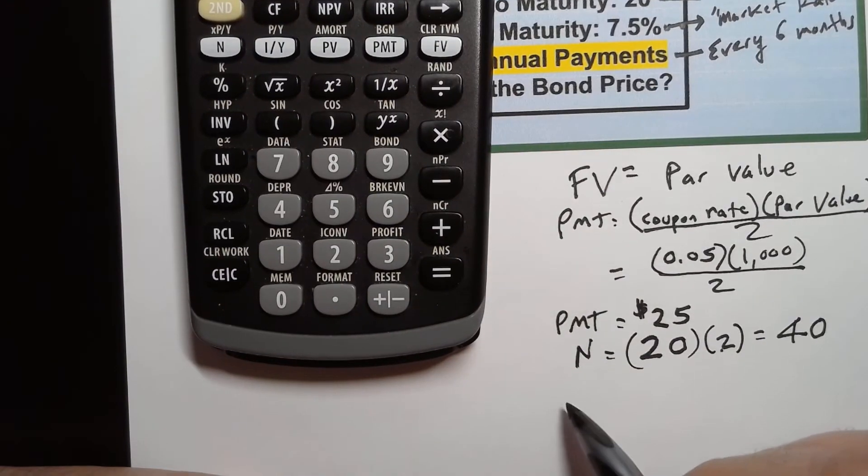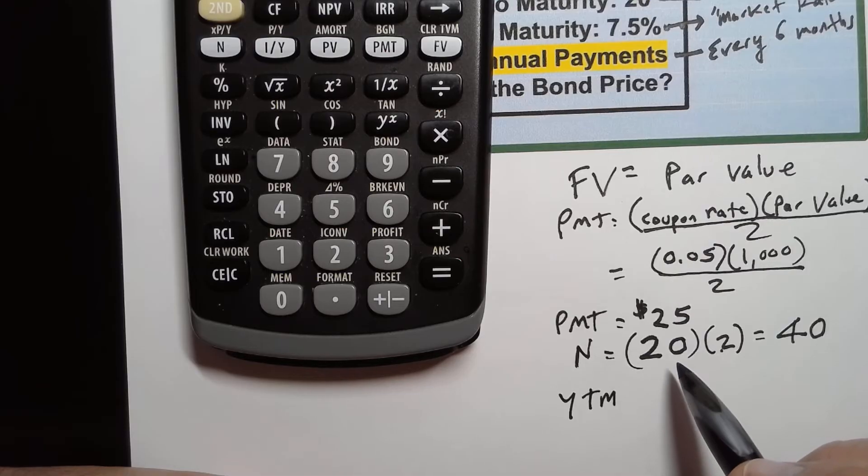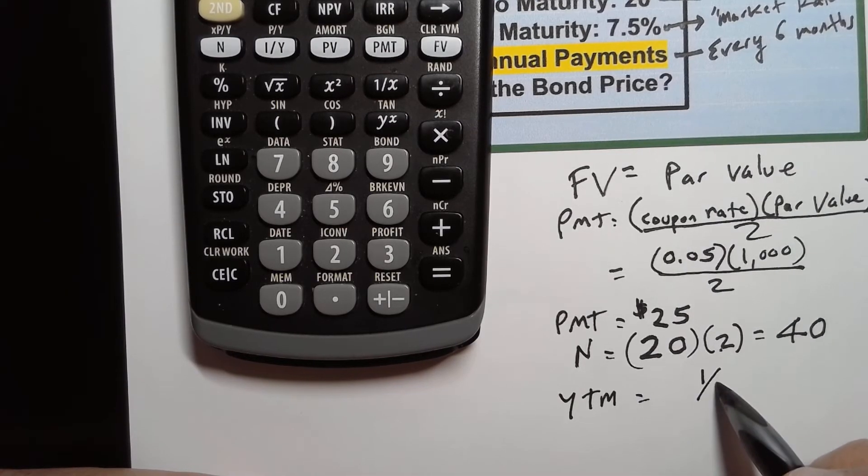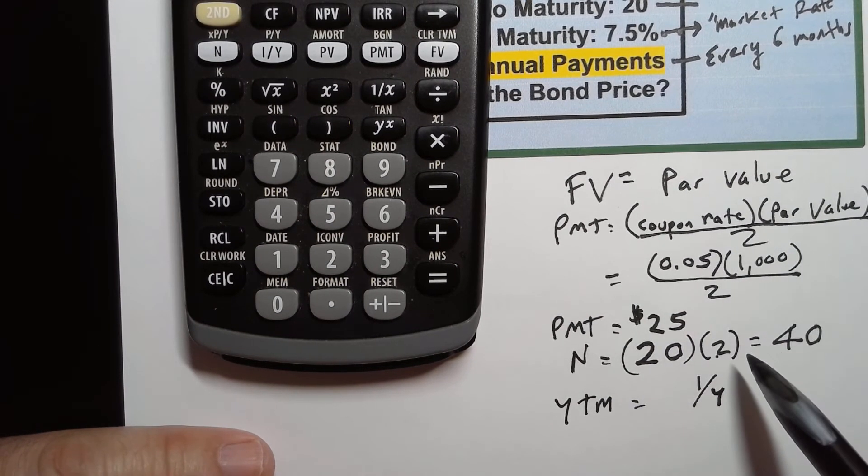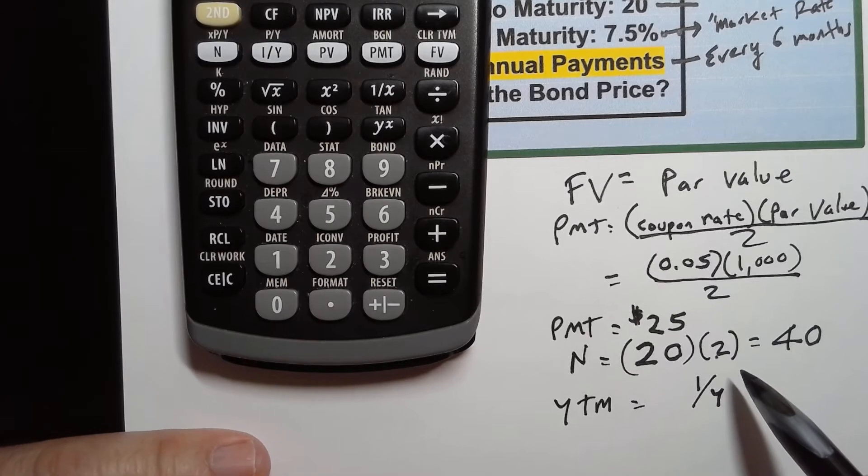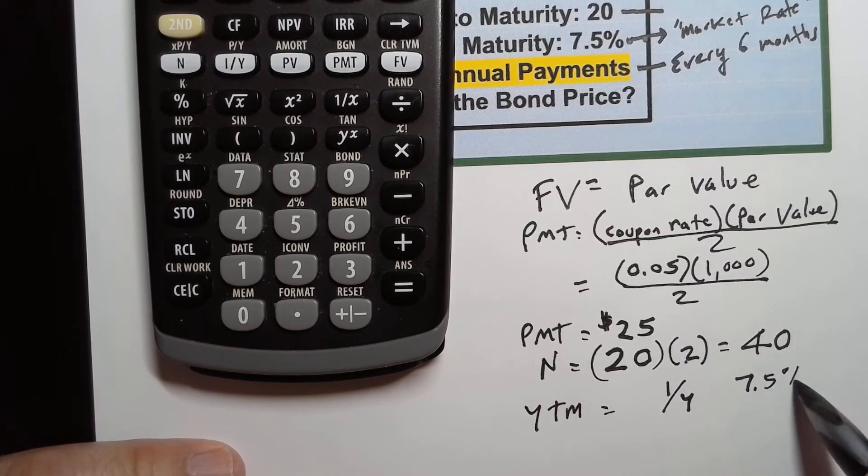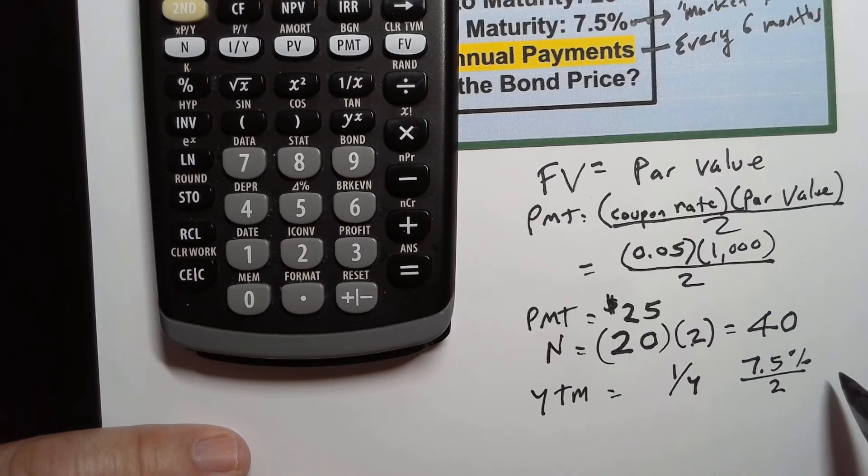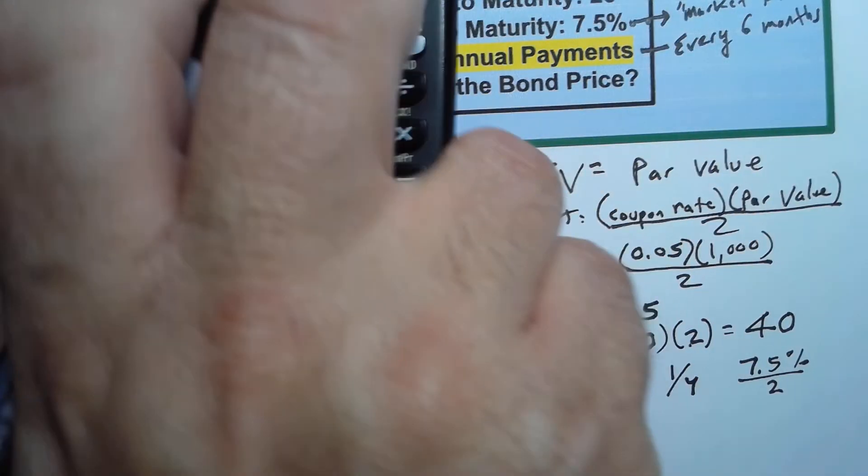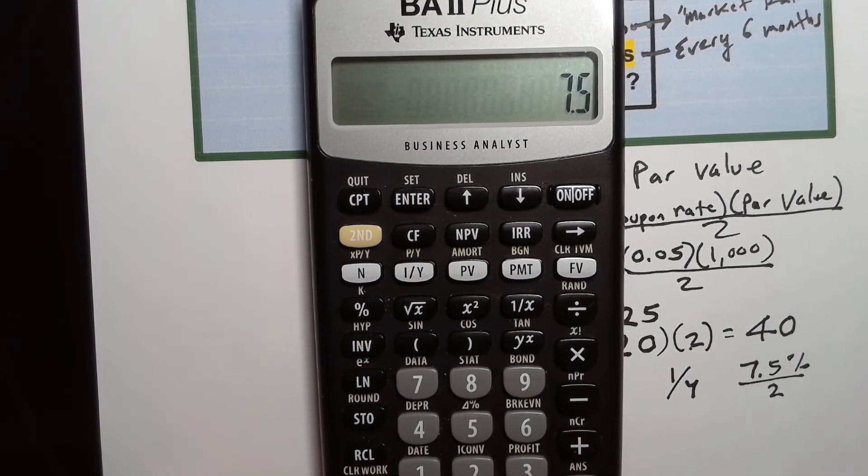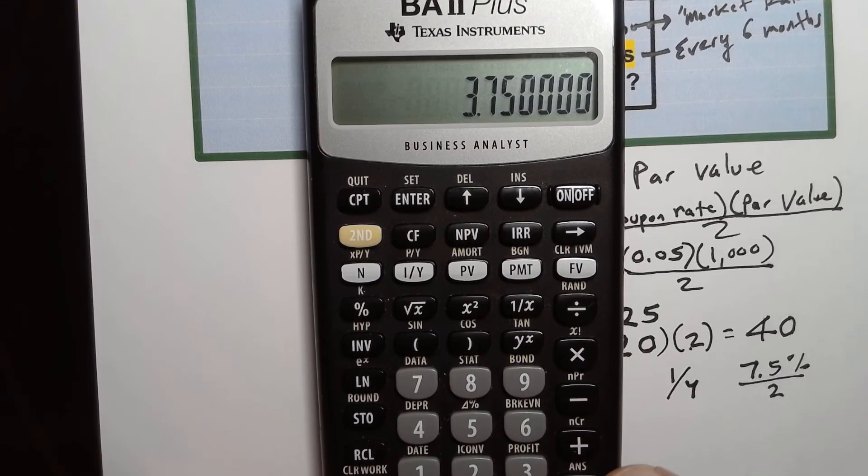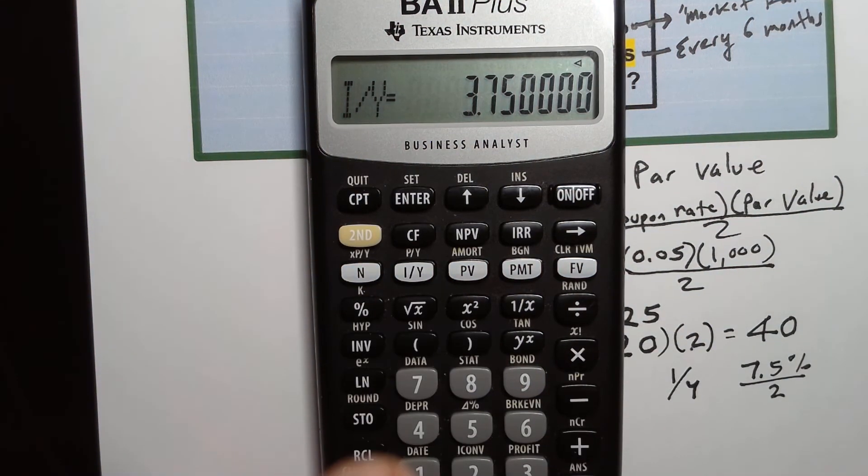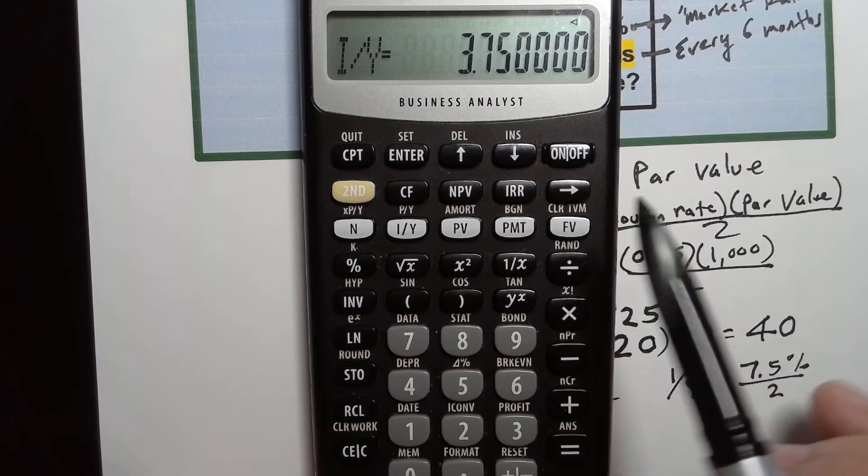The last thing that we have to enter is our yield to maturity number which is the market rate and that's going to be our I over Y. If you recall last time we just put in the 7.5 percent as the interest but in this case since we're getting semi-annual payments we have to take that 7.5 percent and we have to divide it by two because half the interest is for the first payment and half the interest is for the second payment. So 7.5 divided by two is our yield to maturity. So I can use the calculator 7.5 and remember we don't have to put this one in as a decimal, the 7.5 percent interest divided by two equals 3.75 and then I hit my I over Y button. So we've put in the payment, the future value, the n, and our yield to maturity.